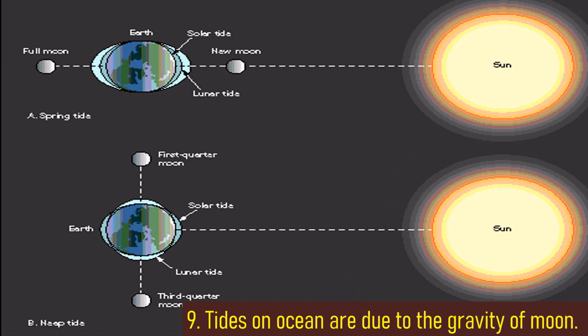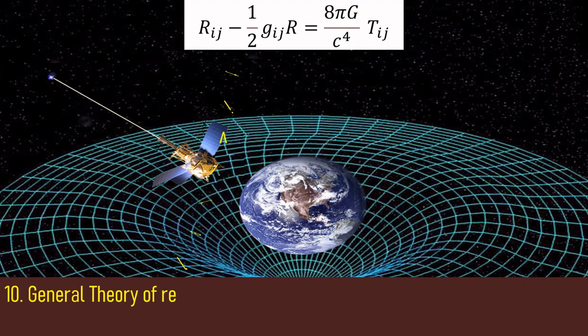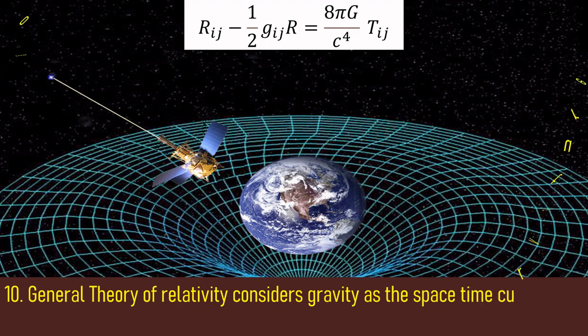Fact number ten: Einstein's general theory of relativity does not consider gravity as a force. It states gravity as the space-time curvature.